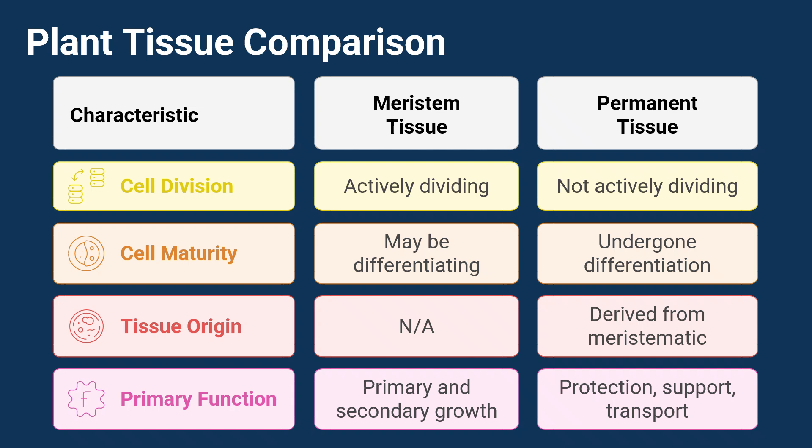For example, you've got epidermal tissue for protection, some tough stuff like sclerenchyma and collenchyma for support, and then xylem and phloem for moving water and food around. Super important.